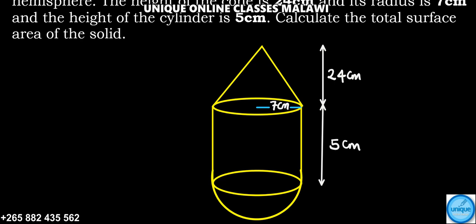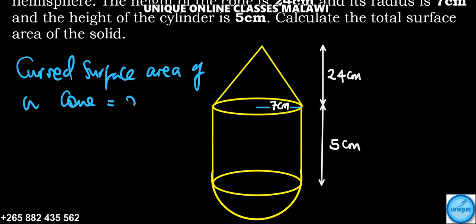We need to find the surface area - the surface area of the cylinder, the surface area of the hemisphere. To find the surface area, you need to be efficient with the formulas. So we need to find the surface area of the cone, which has formula pi r l, where pi is 22 over 7, r is the radius, and l is the slant height.